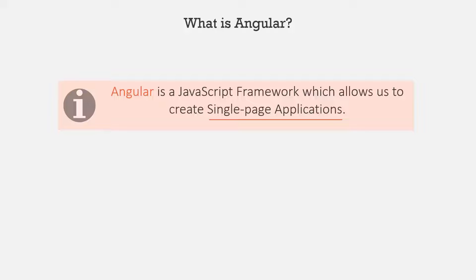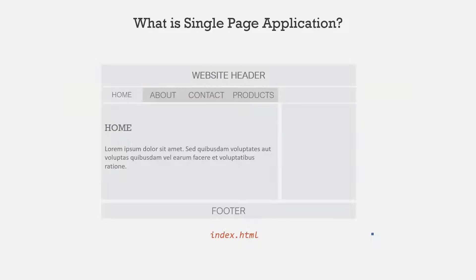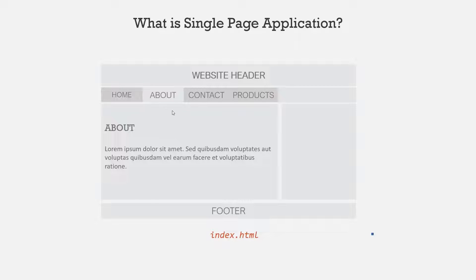Let's understand this with an example. Here we have a demo website with a header, navigation bar, main content area, sidebar, and a footer. This webpage is rendered in the browser when we load index.html. Currently, this webpage is displaying content related to the home section. Now if we navigate to the about section, the content related to the about section is displayed — but the HTML file rendered in the browser is still index.html.